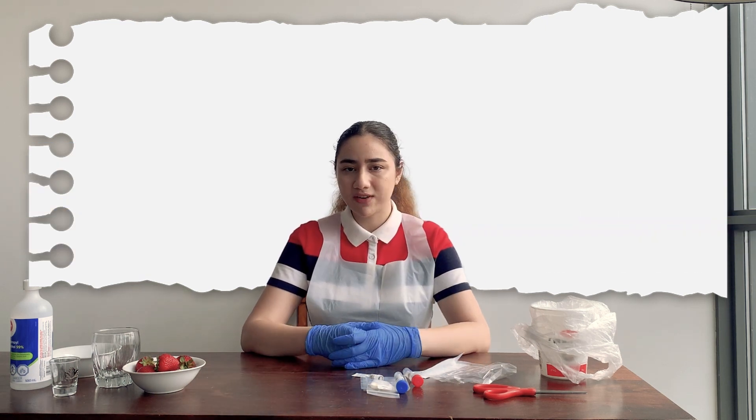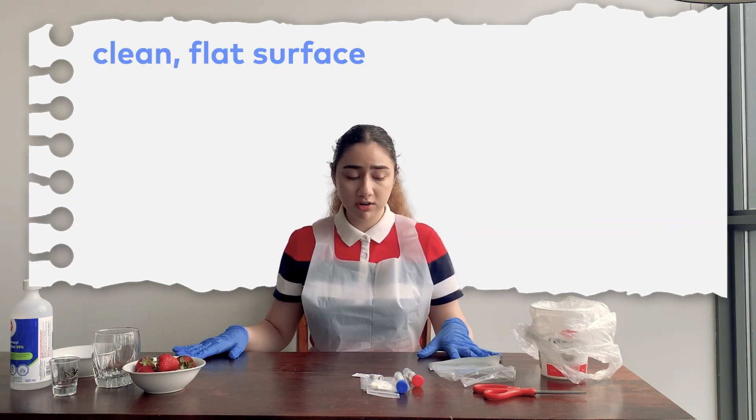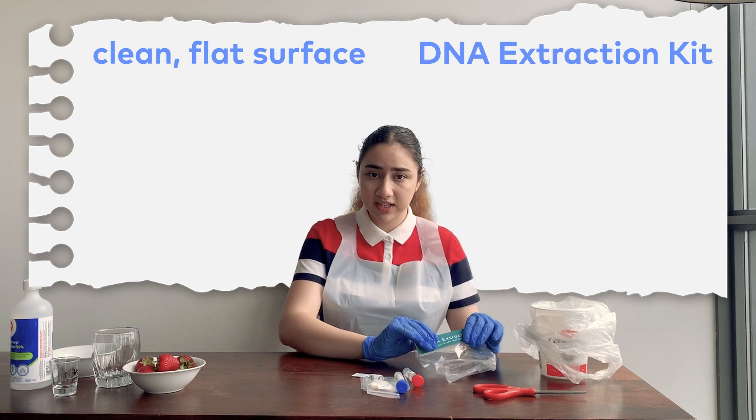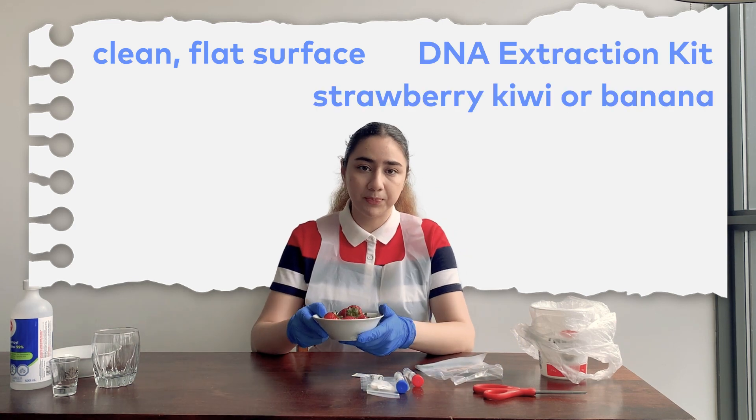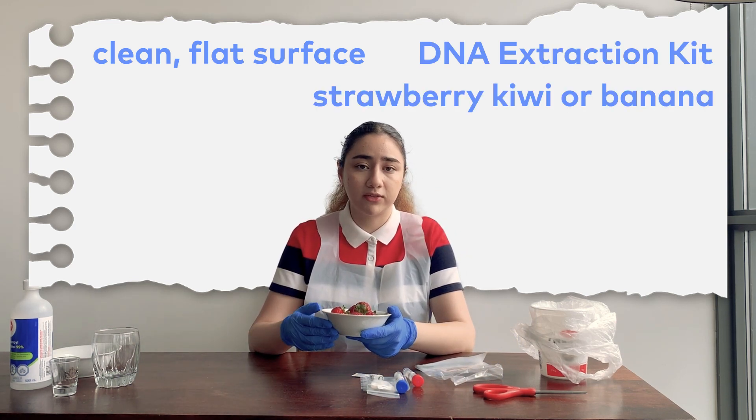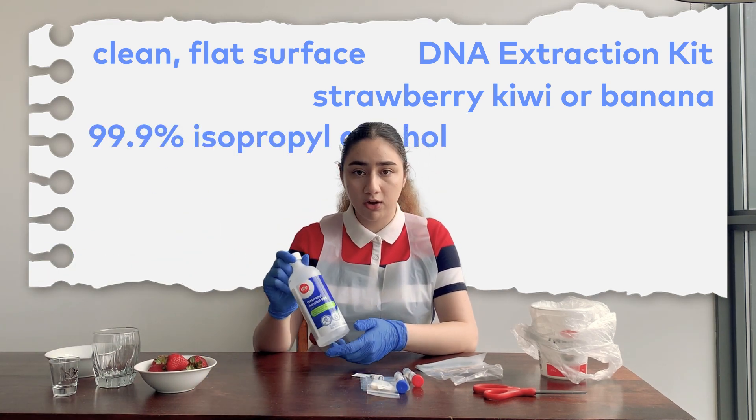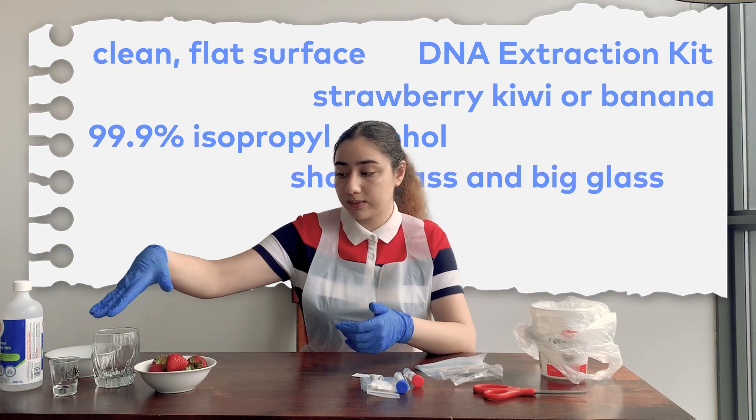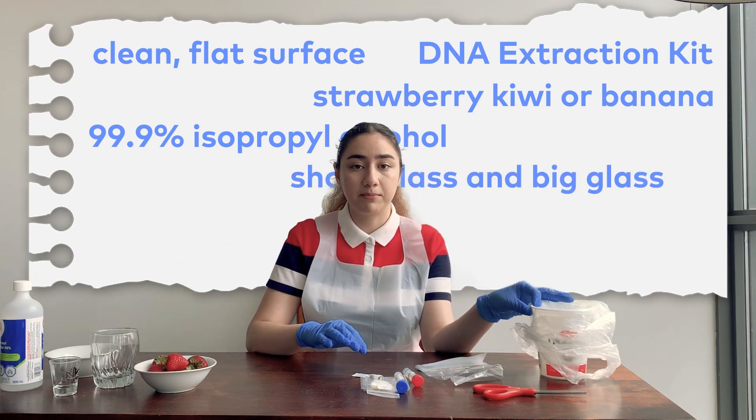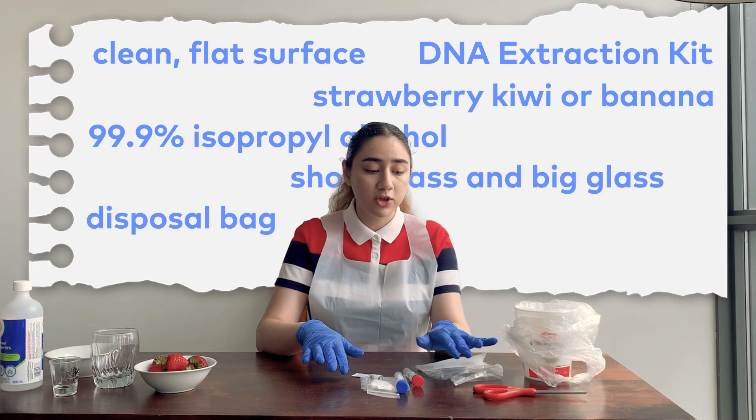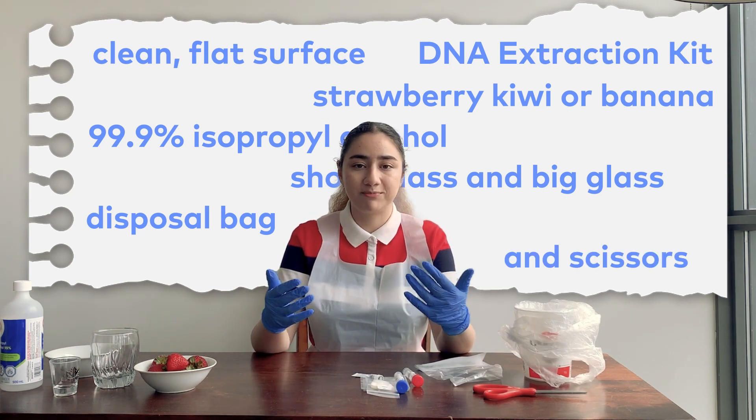Step 2 is setup. Make sure you have a clean and flat surface to work on. You have your DNA Extraction Kit, your strawberries. And if you can't find strawberries, you can use kiwi or banana. You have 91% or 99% isopropyl alcohol. You have a shot glass, one more big glass. You have a bag to put the things you don't need anymore, a pair of gloves and scissors. And you are ready to go.